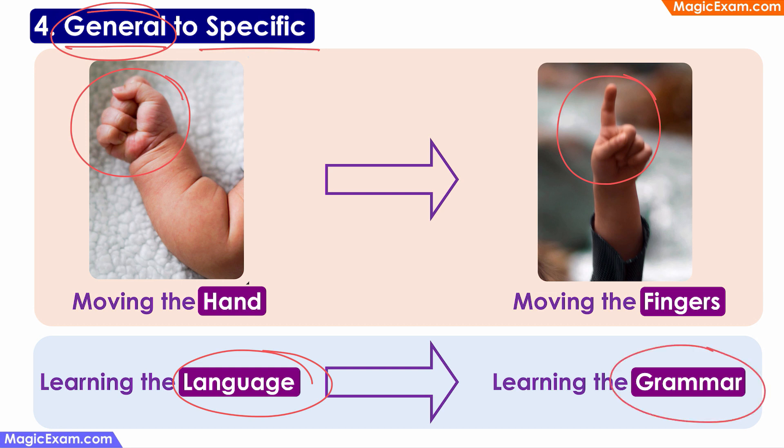Therefore, all types of development will start with the generic or the general aspects first, and only then move towards the specific aspects. So this is the principle of general to specific.